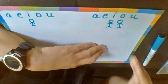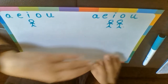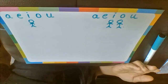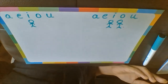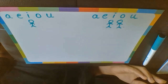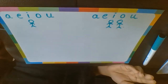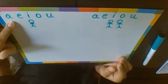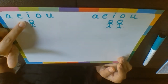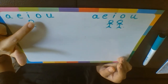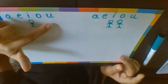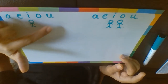So long vowels are read as their own alphabet: A, E, I, O, U. Whereas short vowels sound the phonic sounds — short A says /æ/, short E says /ɛ/, short I says /ɪ/, short O says /ɒ/, short U says /ʌ/.